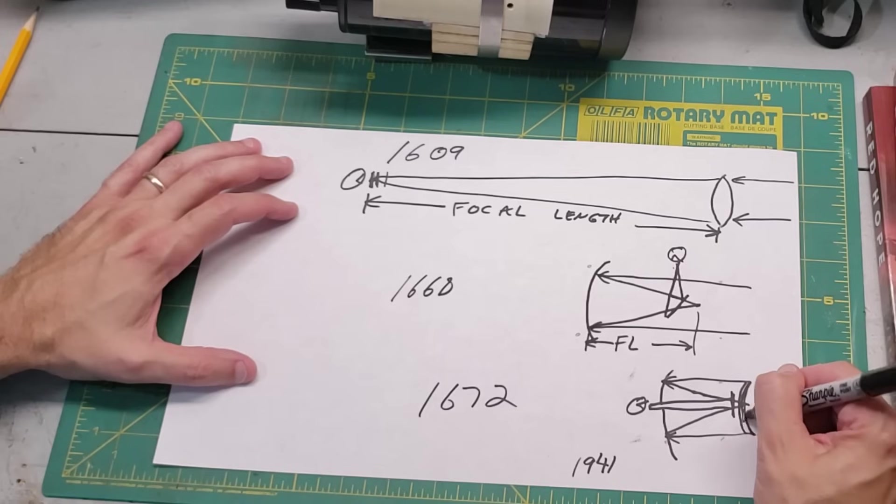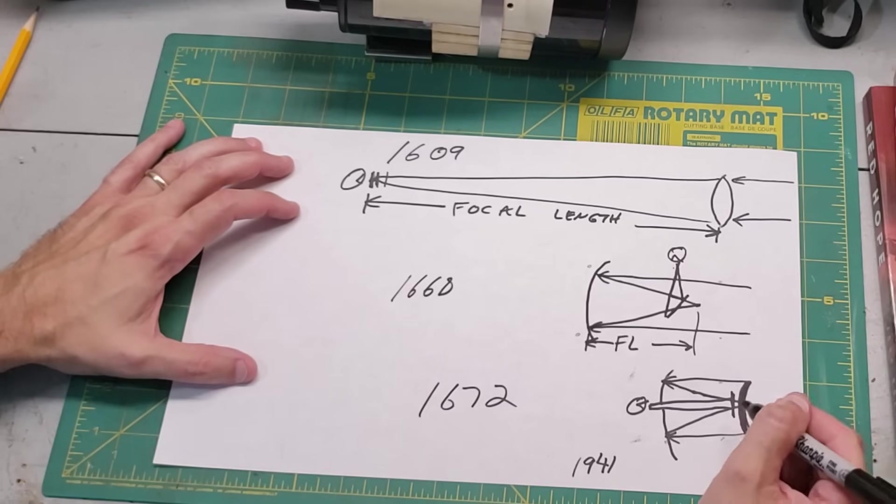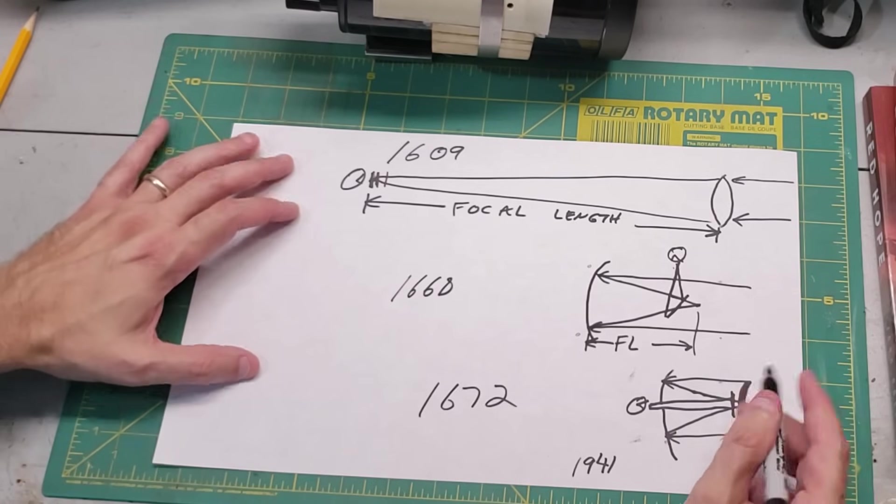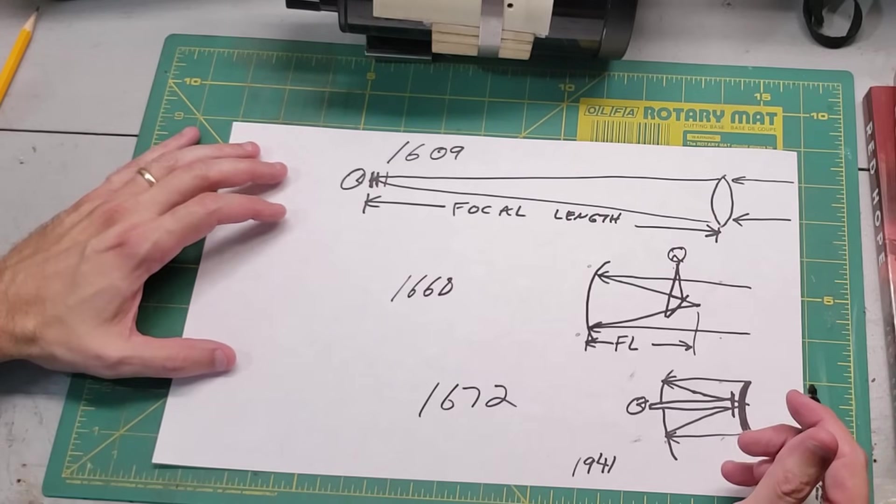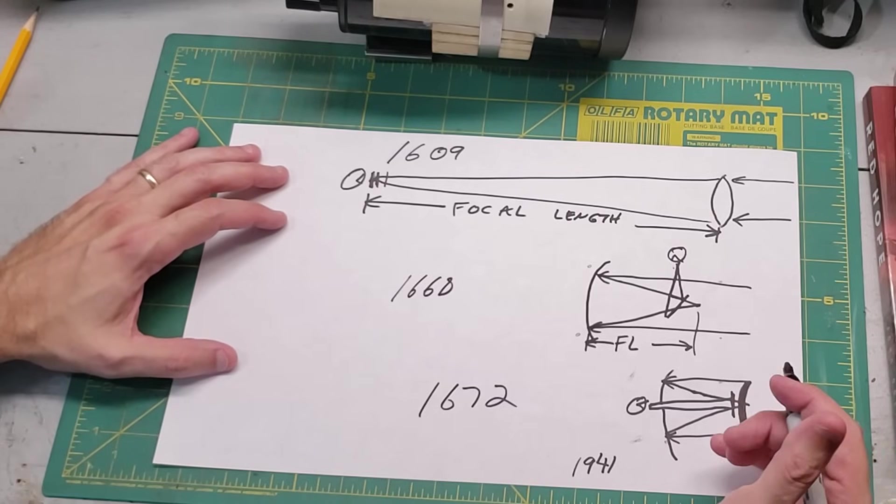This is called a meniscus lens because of its shape, and what that did was it basically treated the light as it comes in, kind of pre-treating it, so that it would eliminate a lot of those off-axis issues.